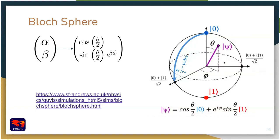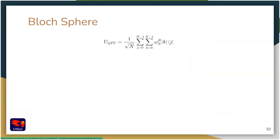Here is what a Bloch sphere representation looks like. Theta and phi are shown on the sphere. The state zero is at the North Pole and the state one is at the South Pole, and any qubit can be represented this way. There is a link to a simulation of a Bloch sphere where you can see how the measurement probability outcomes change as you change theta and phi. This notation with theta and phi allows a very nice visual and intuitive way to understand what happens to a quantum system or what a quantum algorithm does.